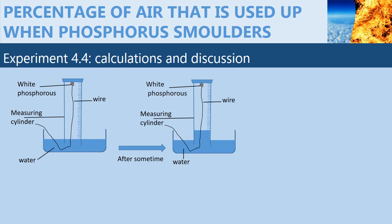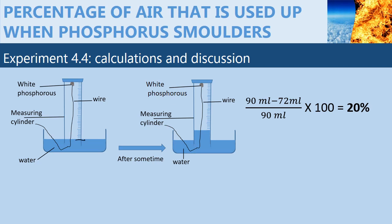From the readings in the measuring cylinder, it is possible to calculate accurately the amount of air that was used. For example, the initial level was 90 milliliters, while the final level was 72 milliliters.